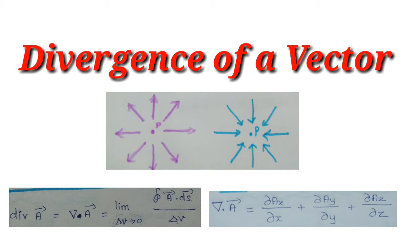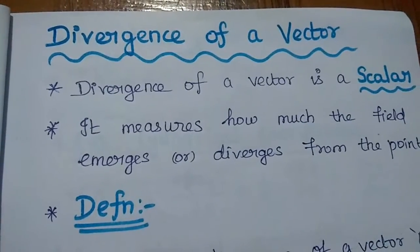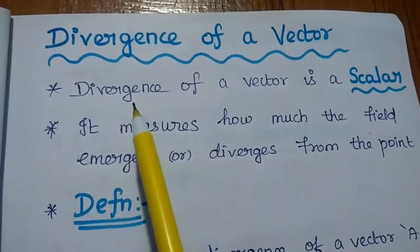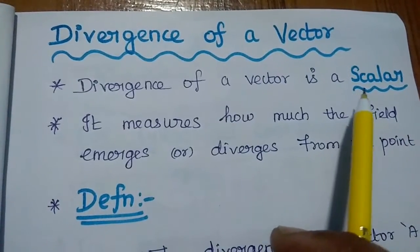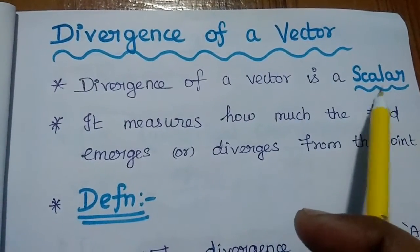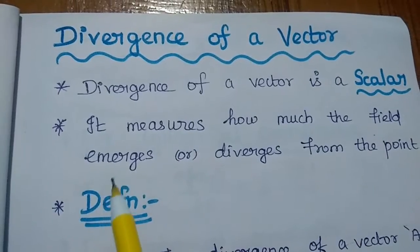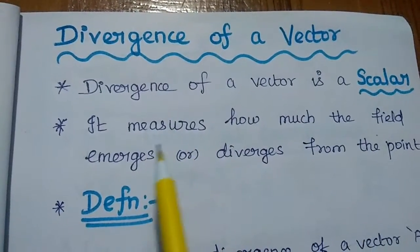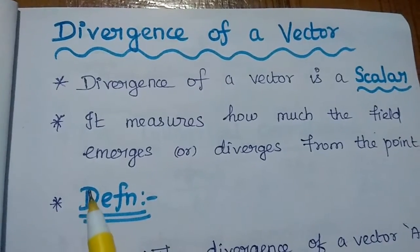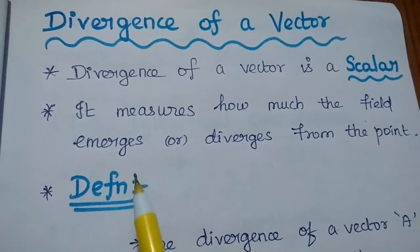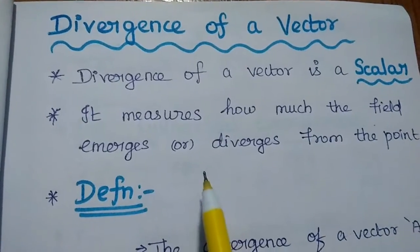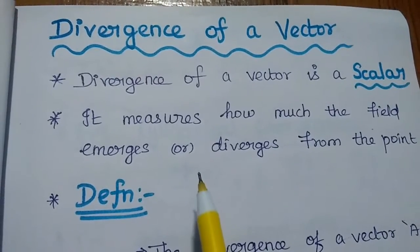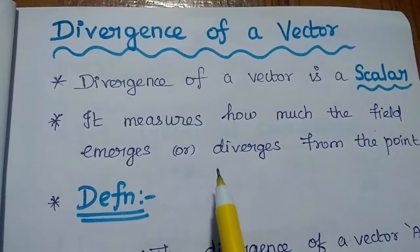Dear students, now we are going to discuss about divergence of a vector and its properties. Divergence of a vector is a scalar. That means, the input for the divergence is a vector quantity, and this will result in a scalar quantity. Scalar means it has only the magnitude. The divergence is going to measure how much the field emerges or diverges from the point — it measures only the amount of field emerging from the point, and does not represent the direction of the field.